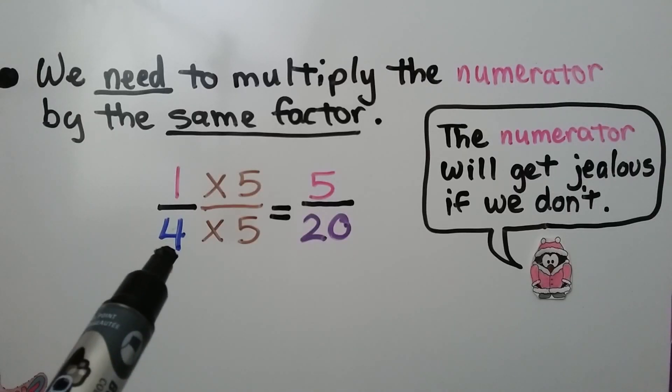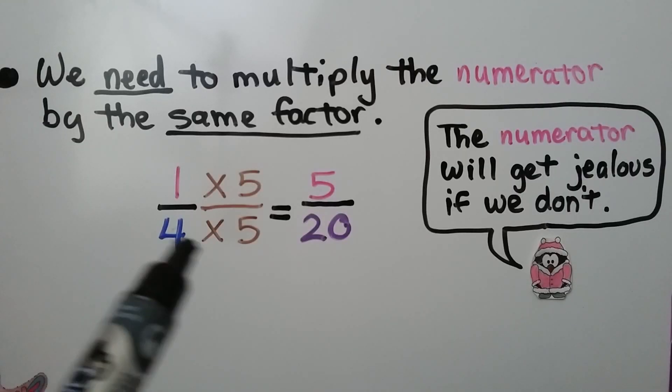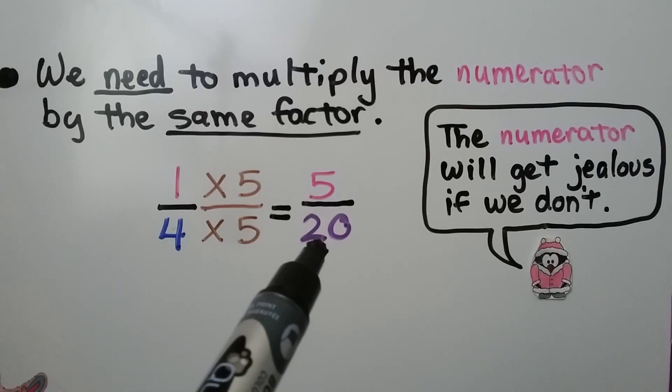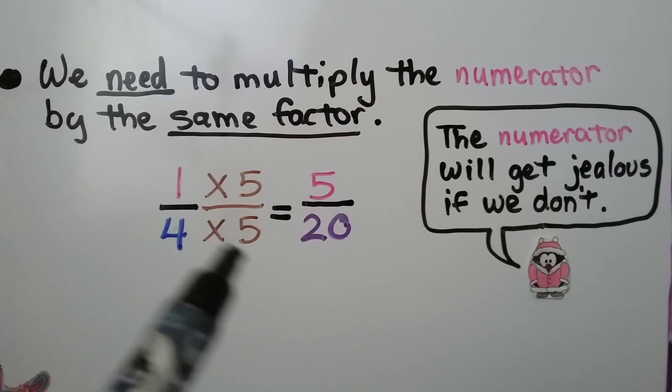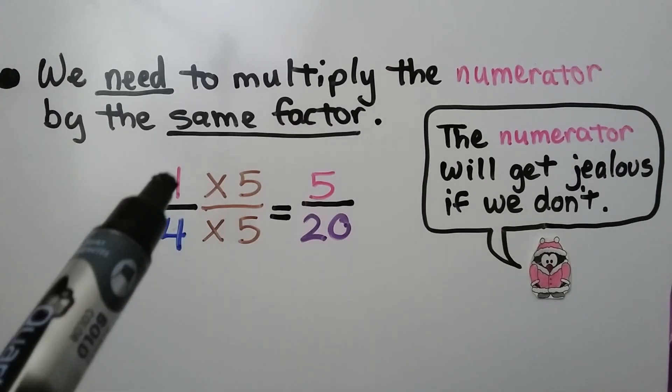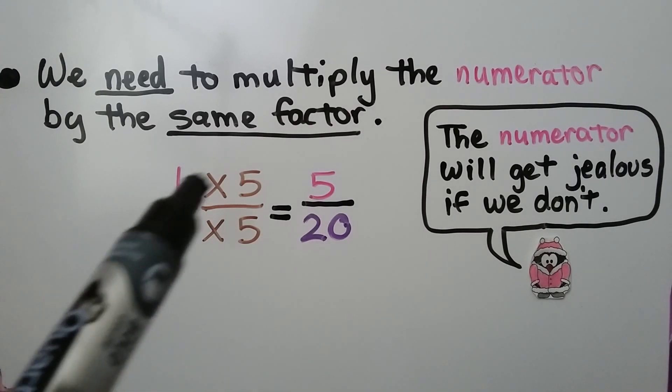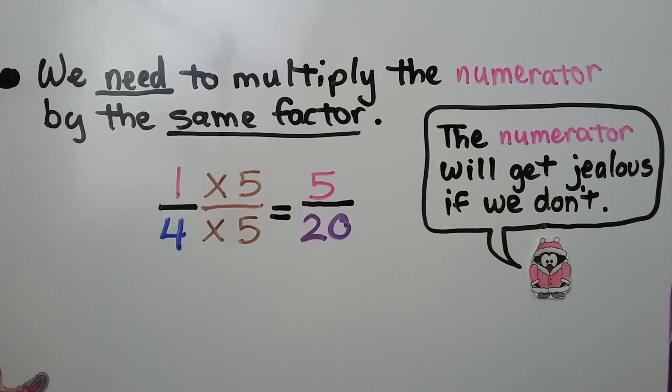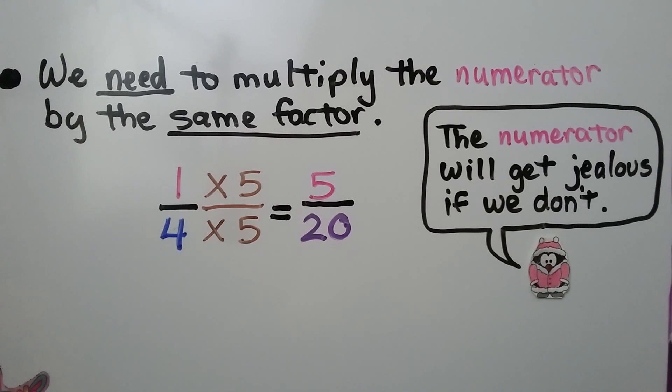So whatever we multiply the denominator by to get 20, we need to multiply the numerator by that same factor. Otherwise the numerator could get jealous.